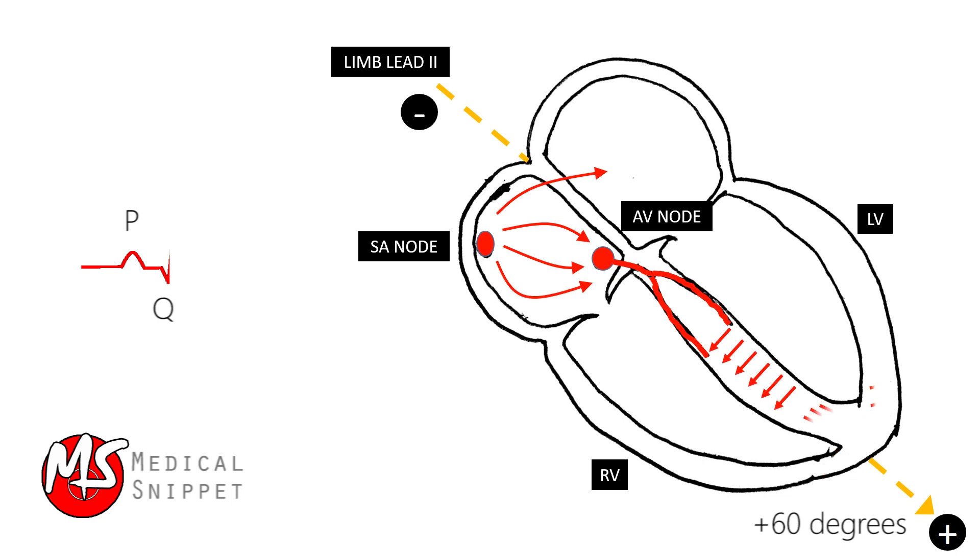In both ventricles, the overall activation pattern begins on septal surfaces and sweeps down toward the apex. This vector is directed towards the positive electrode of lead 2, thus causes a very tall positive deflection called the R-wave in the ECG.